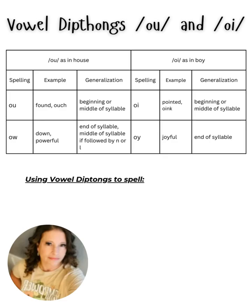Looking at OI as in boy, the spellings are O-I, as in 'pointed' and 'oink'. These generalizations happen at the beginning or the middle of a syllable. And then we have O-Y, as in 'joyful', which appears at the end of a syllable.